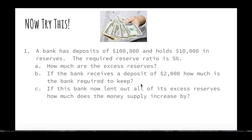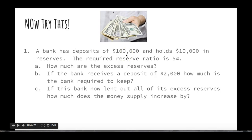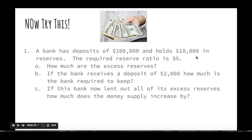Hopefully you figured out the excess reserves for this particular bank. Right now it has $100,000 in deposits and it holds $10,000 in reserves. The required reserve ratio is 5%. 5% of $100,000 is $5,000, so they're required to keep $5,000. However, they have $10,000 in reserves. If they're required to keep $5,000 and they actually have $10,000, that means the excess reserves is $5,000.